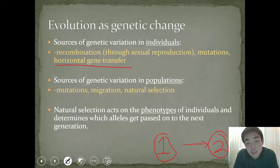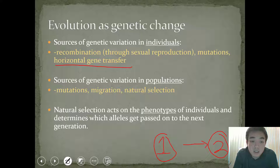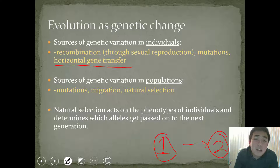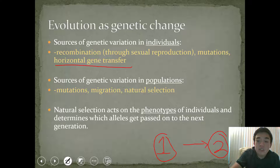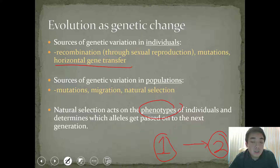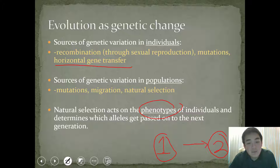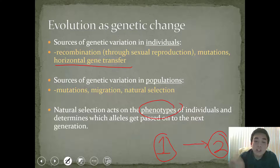Through horizontal gene transfer, it's the reason why there's a rise in antibiotic resistance. Sources of genetic variation in populations include mutations, migration — both immigration and emigration — as well as natural selection. We all know that natural selection acts on the phenotypes of individuals, meaning the physical traits that we see in individuals, which then, due to whether they're advantageous or disadvantageous, determines what alleles get passed on to the next generations.